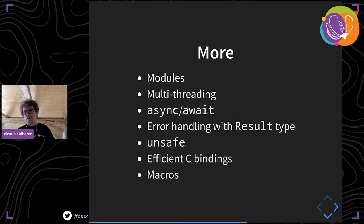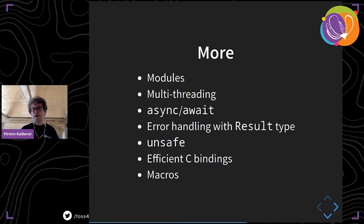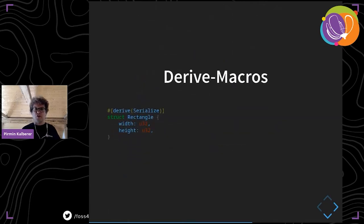There is an unsafe keyword which disables the borrow checker. If you call external libraries, the compiler can't verify the ownership model, so you do that within an unsafe block. Bindings to C are very efficient — there is no overhead, just a direct conversion of C types to Rust types. There are also macros like in C/C++. A special type is derive macros, which give you functionality like serializing a struct automatically.